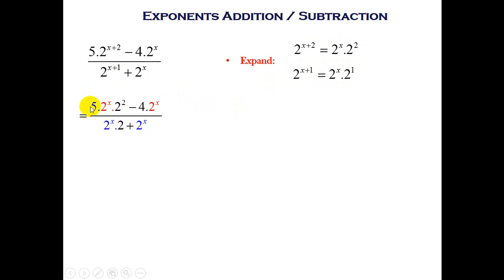So this is what we now have. 5 times 2 to the power x times 2 to the power 2 minus 4 times 2 to the power x all divided by our denominator. The next thing, if we look at the numerator, you will notice, and I've highlighted this with red, that 2 to the power x is common.